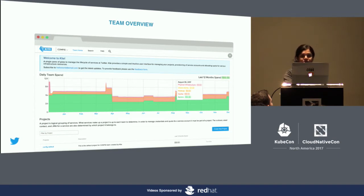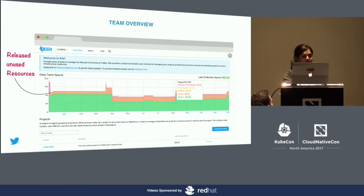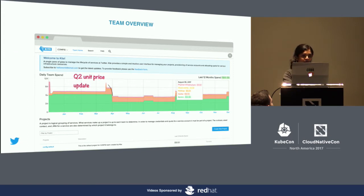Chargeback data has enabled teams to understand their team spend and attribute costs to actual events. For example, about a year back, we realized we had some underutilized resources and we were able to release those back into the resource pool. Unit price updates are done quarterly — that is the dip you see after the unit price update in Q2.